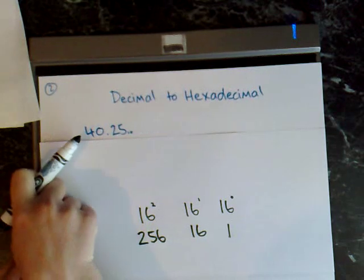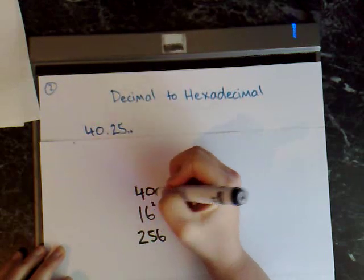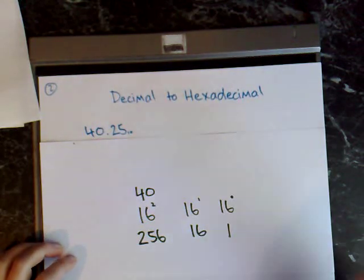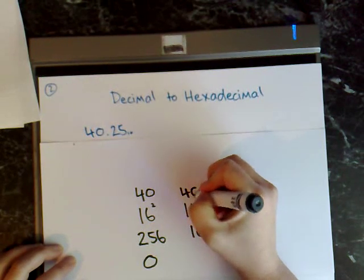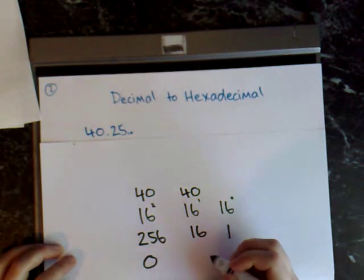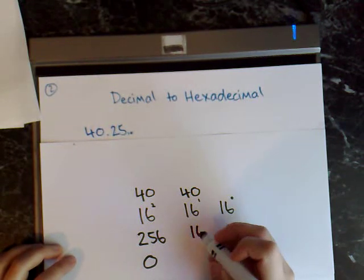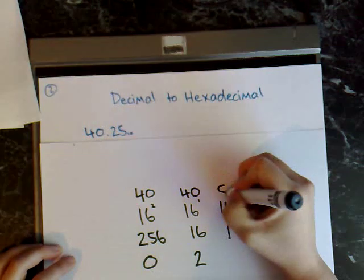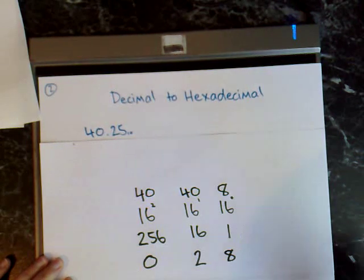Again we'll do the whole part first and the fractional part last. Write the number you want to convert above, then divide: 40 divided by 256 will be 0. Carry the 40 across — 40 divided by 16 fits twice, so put 2 here with a remainder of 8. Then 8 divided by 1 equals 8.